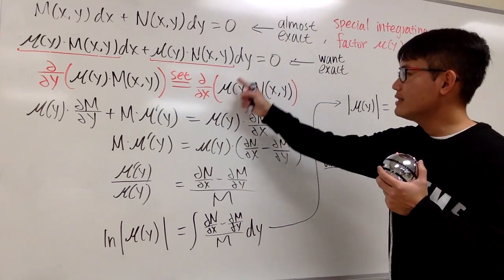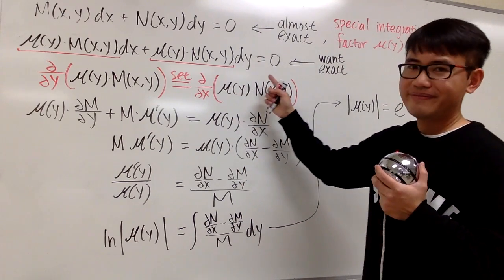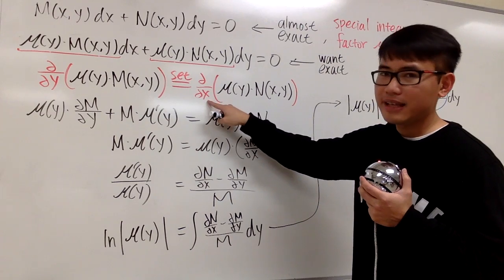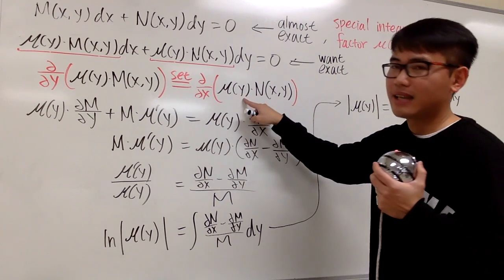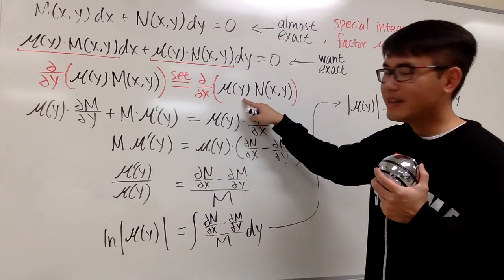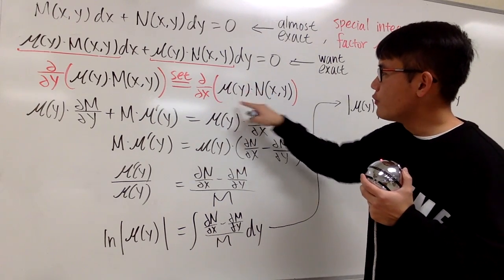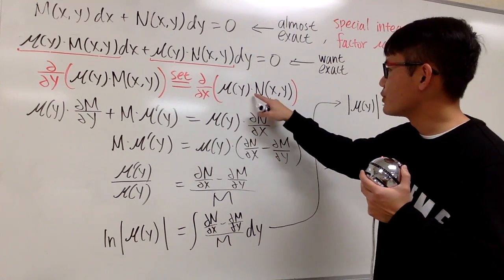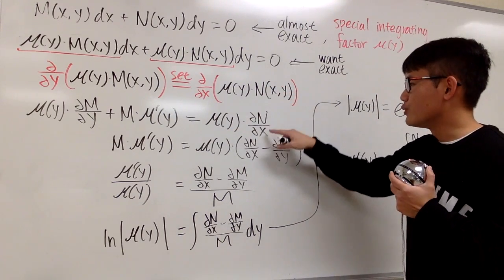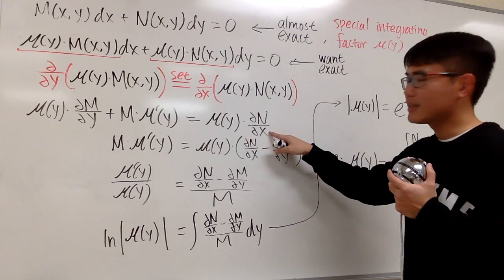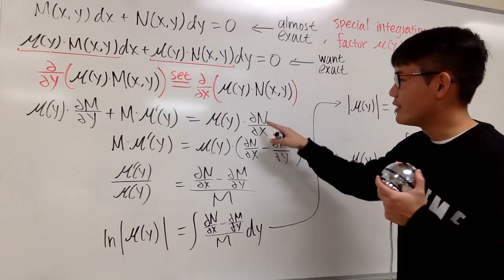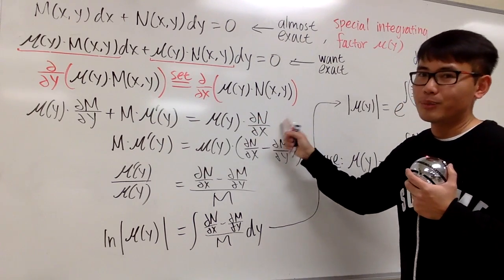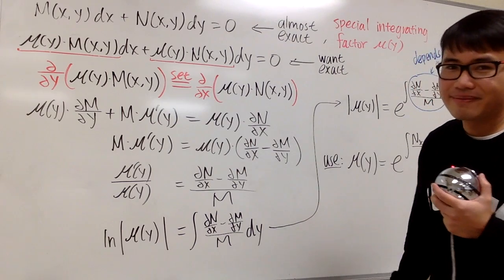On the other side, we are taking a partial with respect to x, which means y is the constant. So mu of y stays right there, and we just do the partial of n with respect to x. We don't need the product rule here — that's nice.